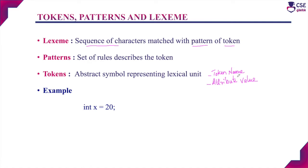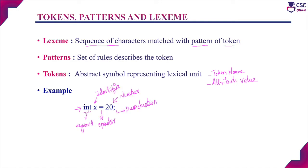The token will have a token name and an optional attribute value. For the token names, the attribute value may also be given. This attribute value will be used by the other phases of the compiler. Considering the example: int x = 20. Once the lexical analyzer identifies 'int' as a lexeme, that lexeme will be compared with the pattern. The pattern will compare this lexeme with the reserved words present in the list, and if it matches, that token is called a keyword.